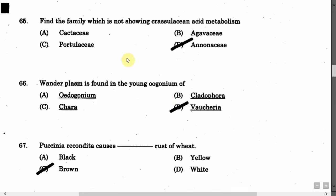The next question is: Find the family which is not showing Crassulacean acid metabolism. Option A: Cactaceae. Option B: Agavaceae. Option C: Portulacaceae. Option D: Annonaceae. The correct answer is Option D, that is Annonaceae.